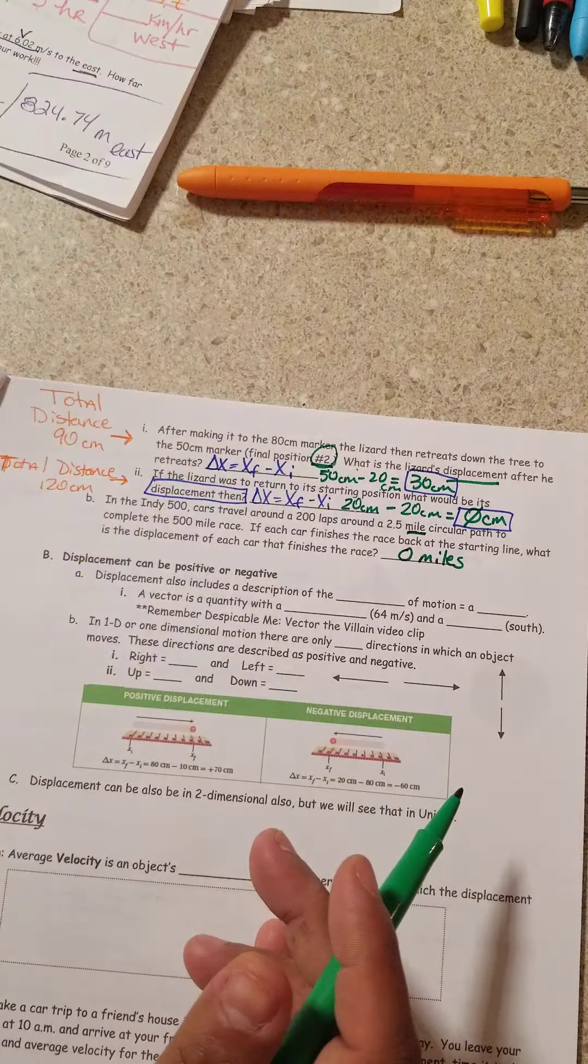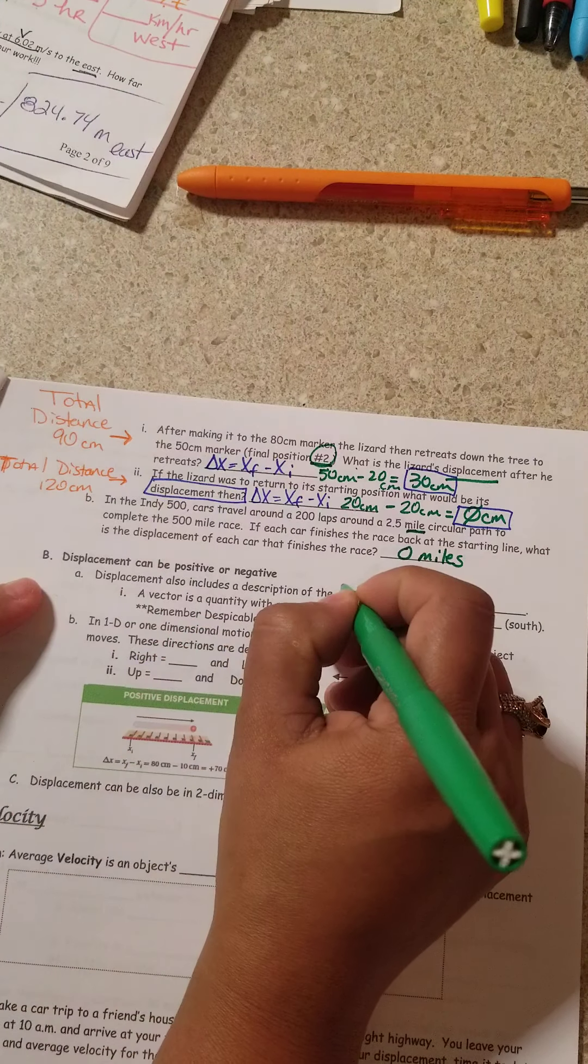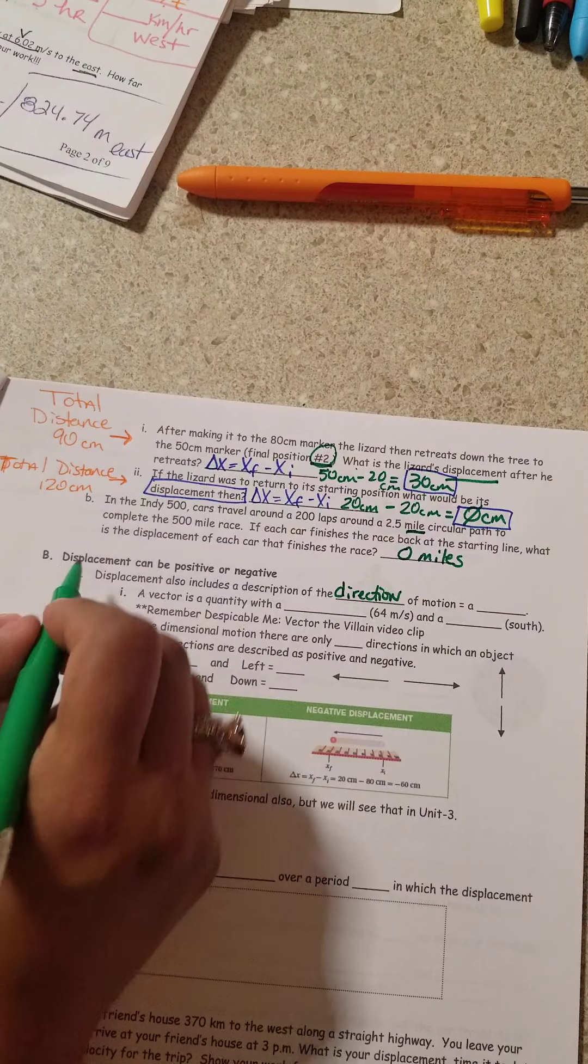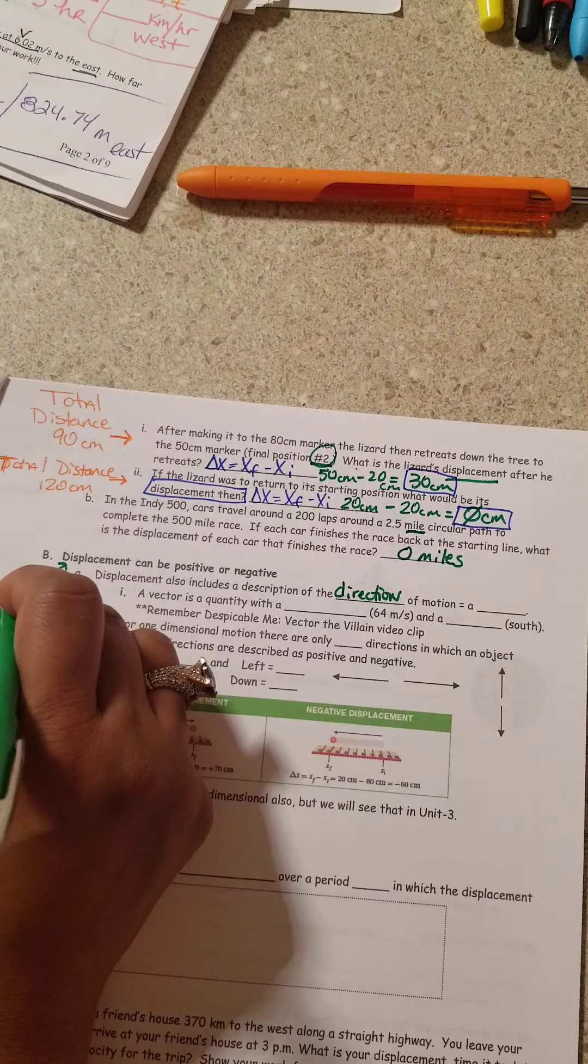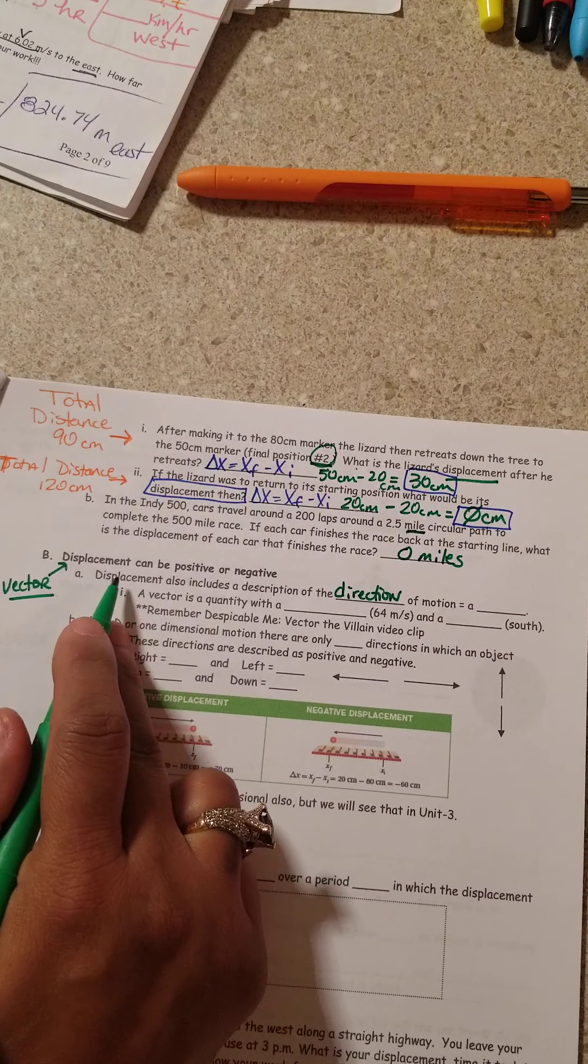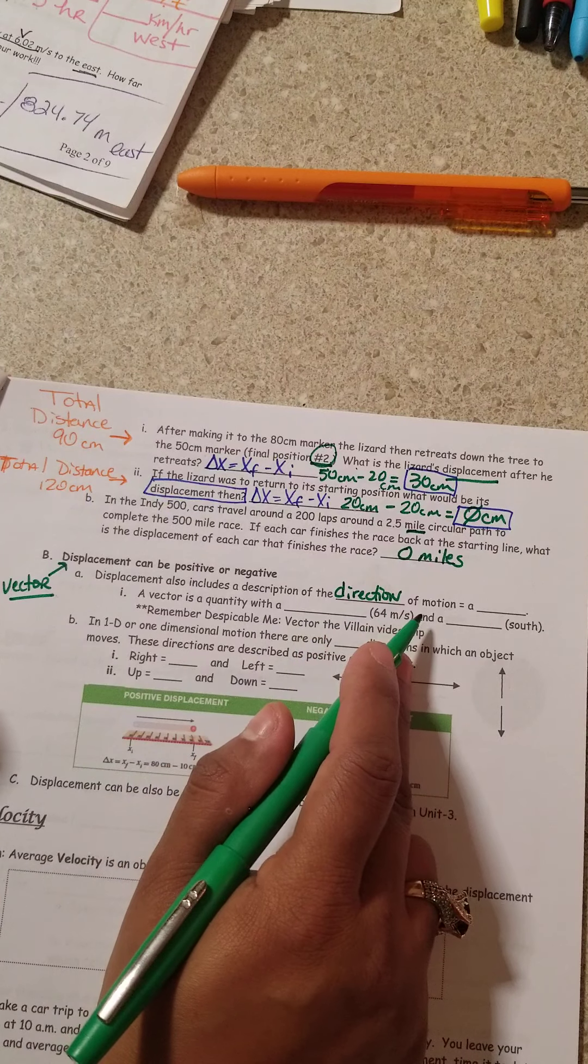It says here, displacement can be positive or negative. Displacement also includes a description of the direction. Because displacement is a vector. So since displacement is a vector, it means it has direction of motion.